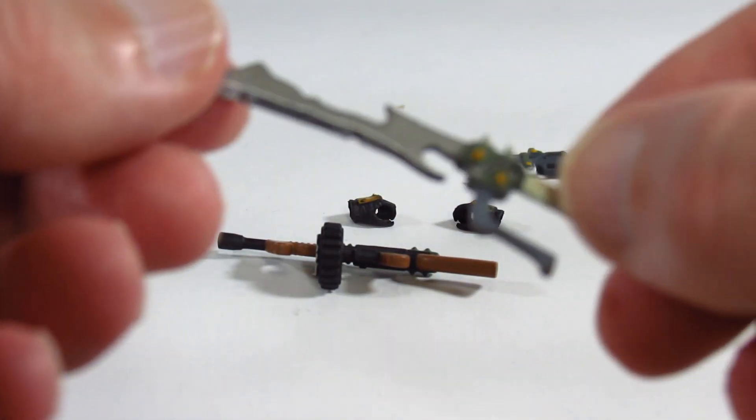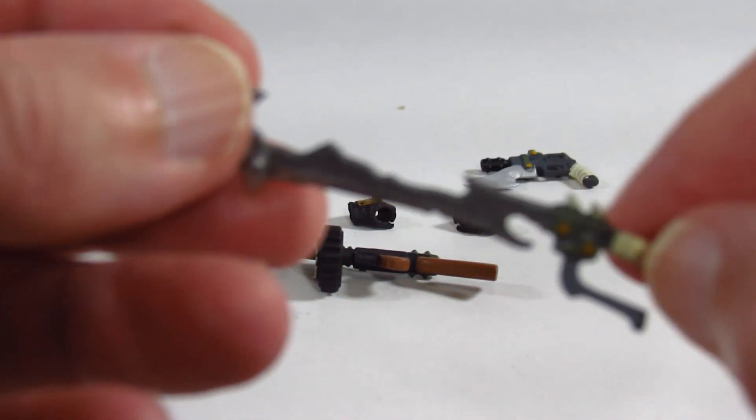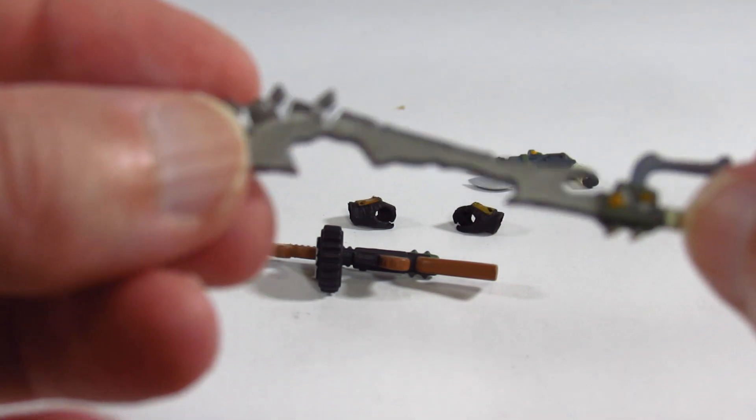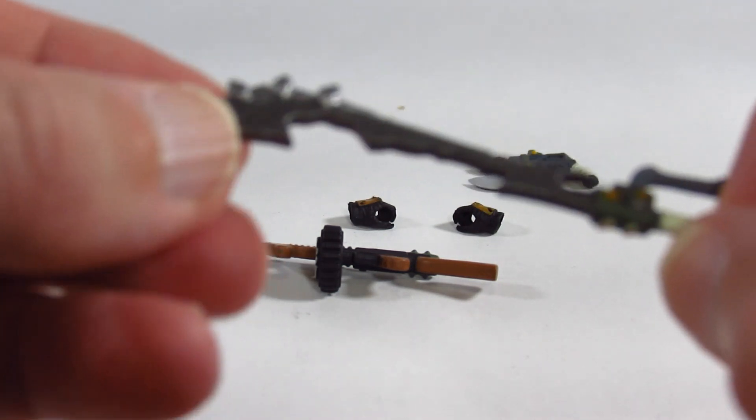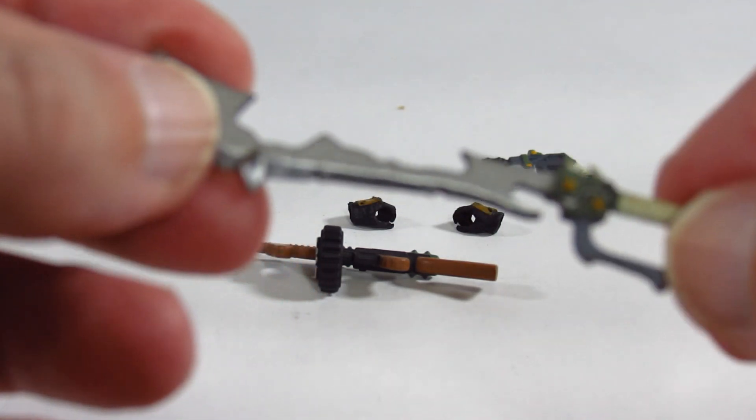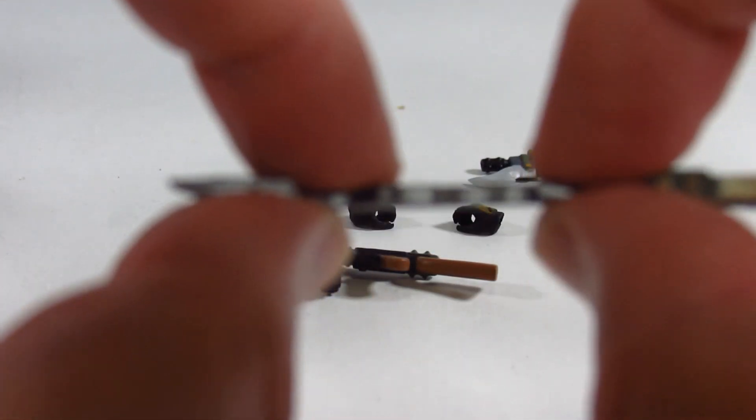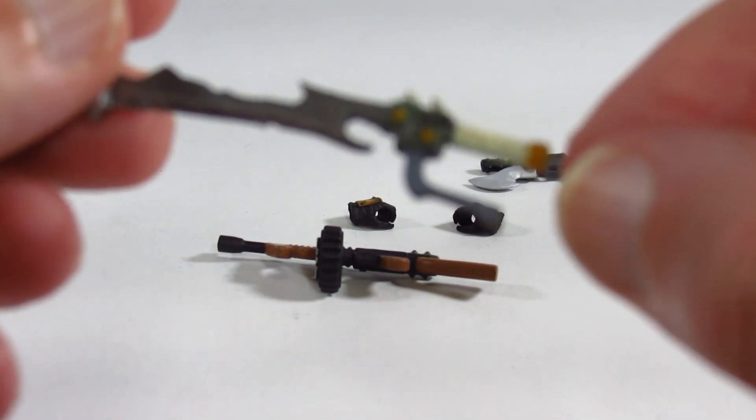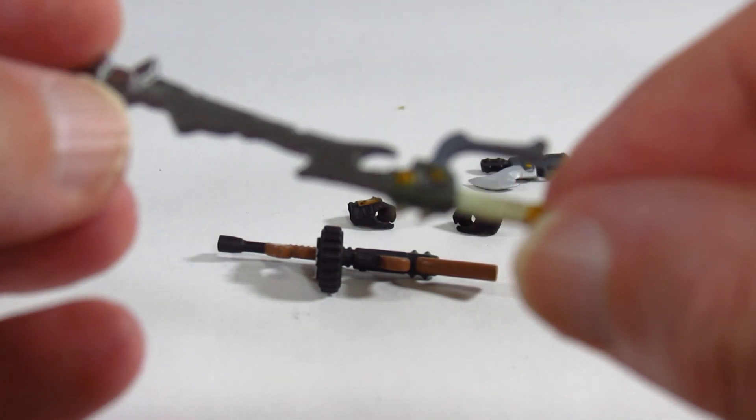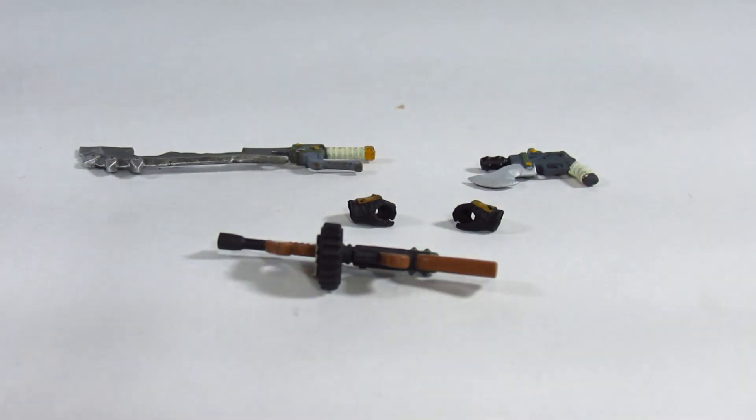And then we have a sword, some post-apocalyptic wasteland future kind of sword. Not sharp but it certainly looks pretty cool. And again it's not a pliable plastic, you don't want to try to bend it, but nicely sculpted and nicely painted. So a nice set of accessories that go along with Jack.